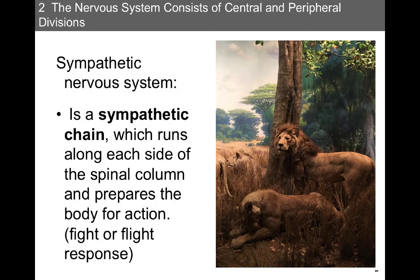The sympathetic nervous system is a chain running along each side of the spinal column that prepares the body for action — we refer to this as the fight-or-flight response. So if you're walking to class and saw a lion chasing you, your blood pressure and heart rate would increase, your bronchial tubes would dilate so you could take in more oxygen, which you'd pump through your dilated peripheral blood vessels to your muscles, and your pupils would dilate. Certain functions would cease — digestion can wait until later.